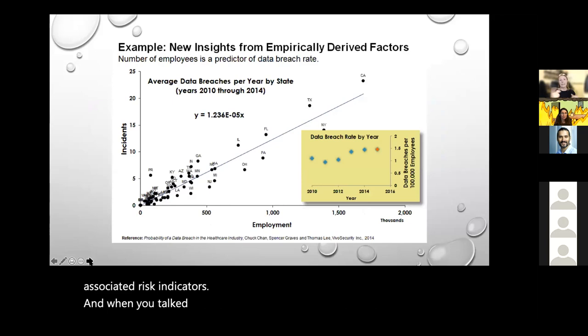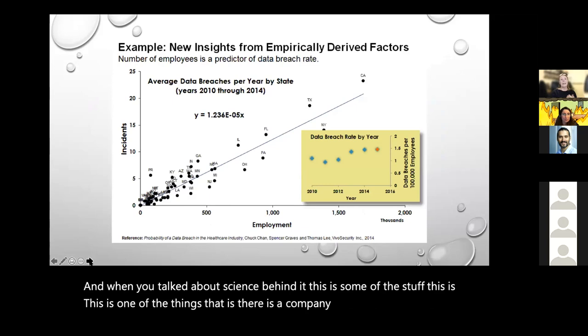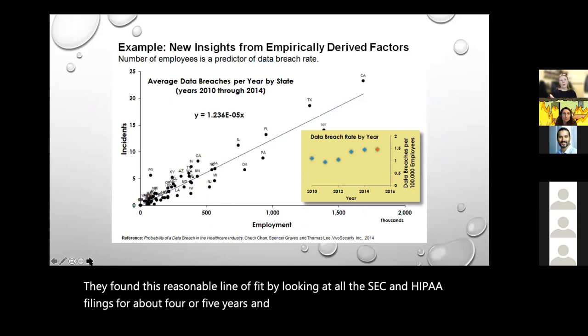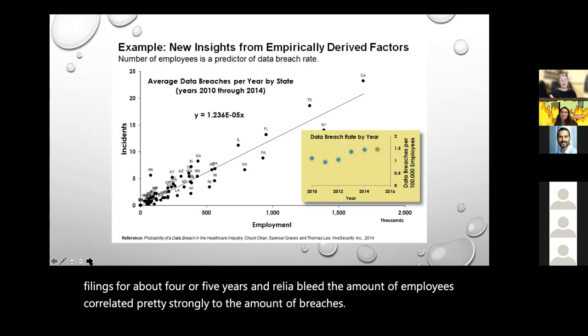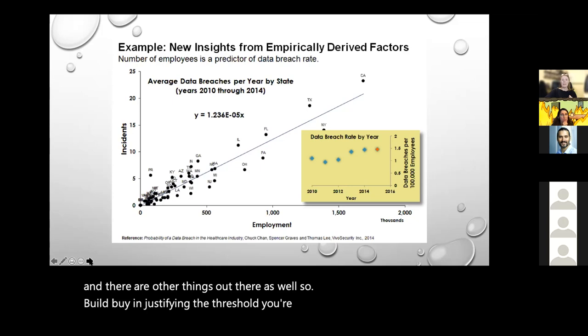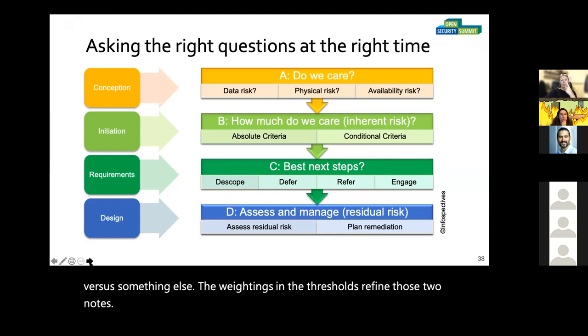And when you talked about the science behind it, there is a company called Vivo Security. They found a reasonable line of fit by looking at all the SEC and HIPAA filings for about four or five years. And reliably, the number of employees correlated pretty strongly to the number of breaches — which is intuitive. If data passes through more hands, more will go wrong. But we haven't had data to go with that until recently. Now we've got something. So build that in: define the threshold you're putting on what's more risky versus something else, and refine those weightings and thresholds through this process.